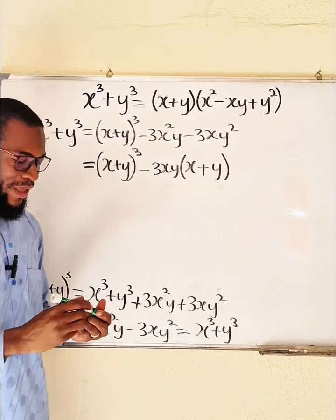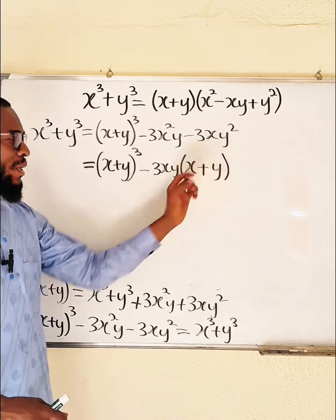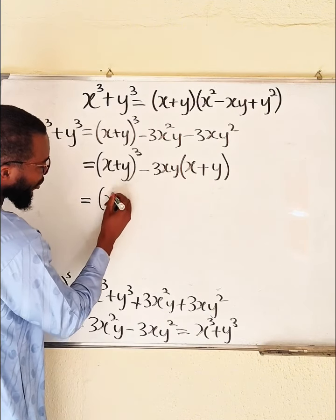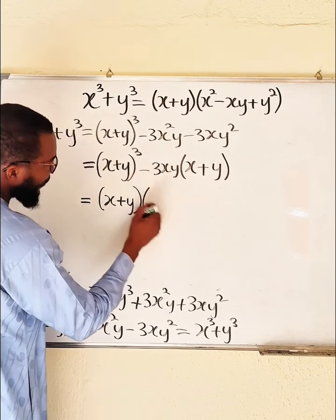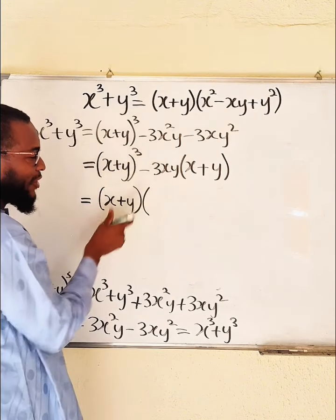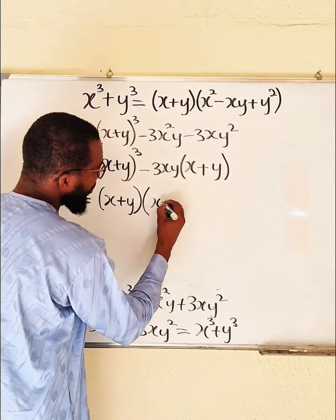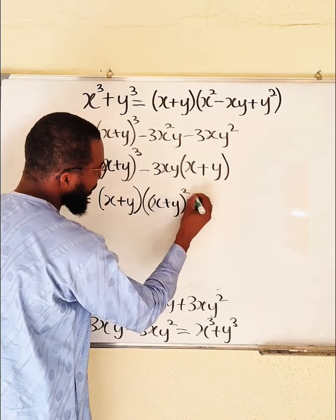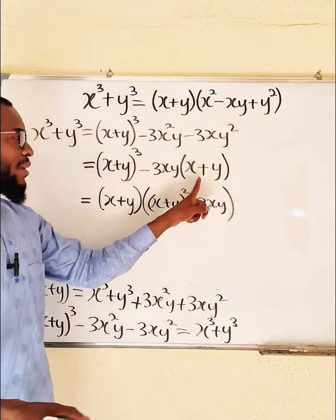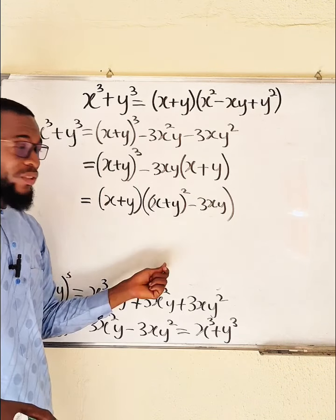Now if you observe, this is raised to the power of 3, but this is raised to the power of 1, so we can factor out something in common again. So this is equal to x plus y — from this, we have x plus y to the second power left, because we have taken x plus y to the first power outside. So we still have x plus y to the second power, then minus 3xy, because this is outside already.